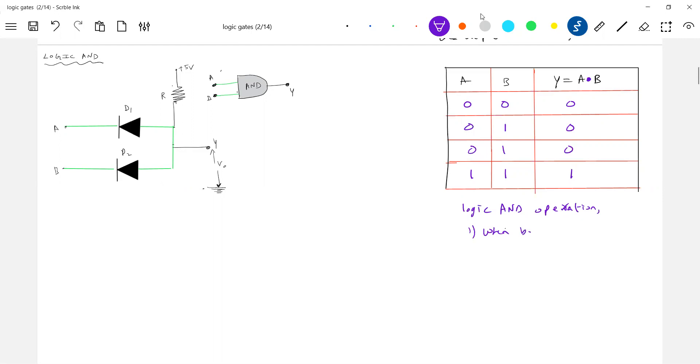When both the inputs are high, then only it will be high. The output will be high. In remaining all other cases, the output will be low, finish.